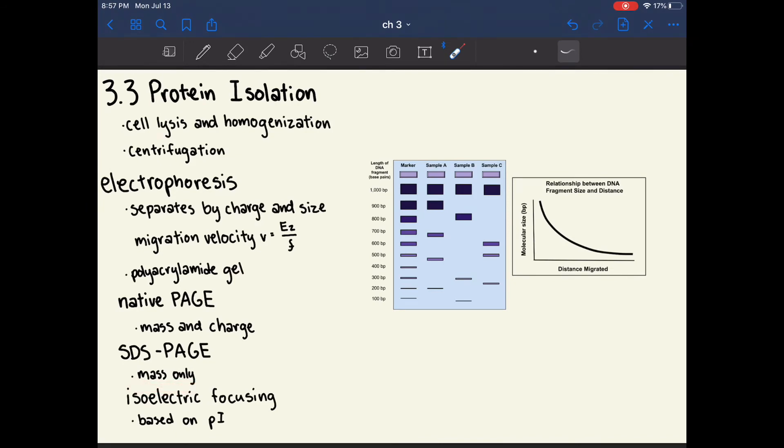Another type of electrophoresis is called isoelectric focusing, which is based off of the pI of the protein. We discussed how to calculate the pI or the isoelectric point of a protein in chapter one, and how isoelectric focusing works is that the entire gel is made in a gradient from increasing to decreasing pH, and a protein will migrate to where it is the most neutral, or it will migrate to its isoelectric point on the gel.